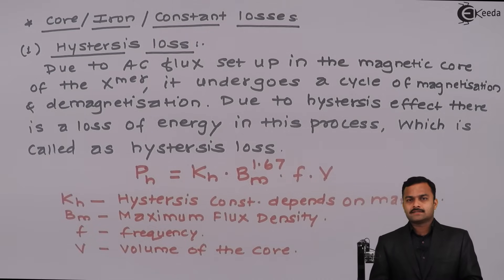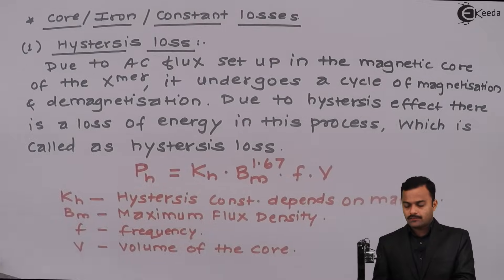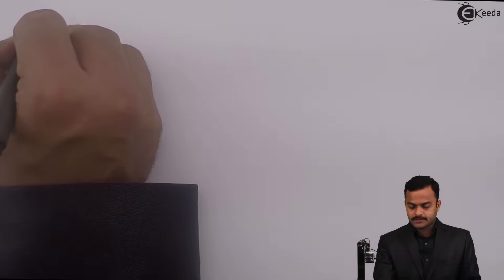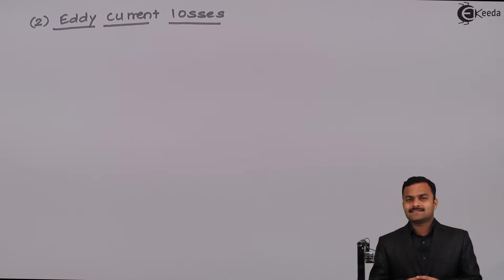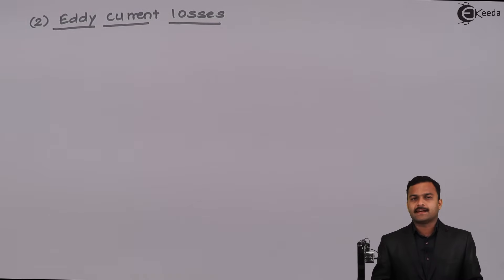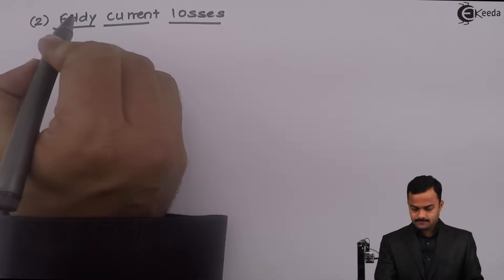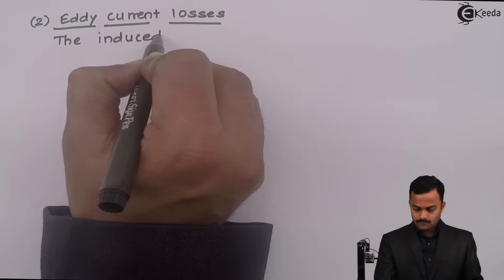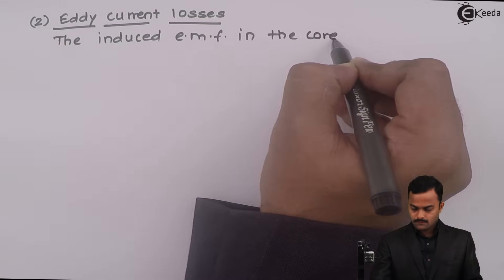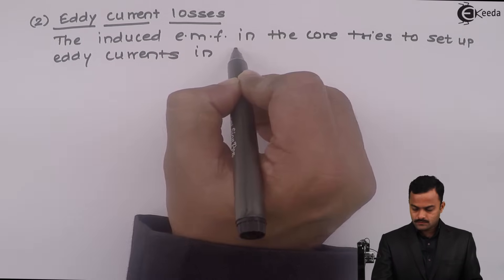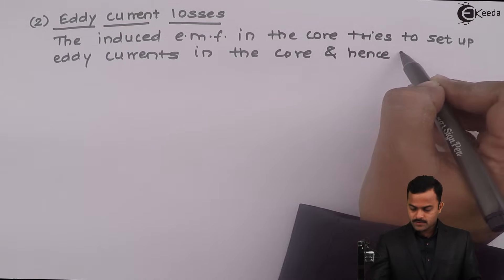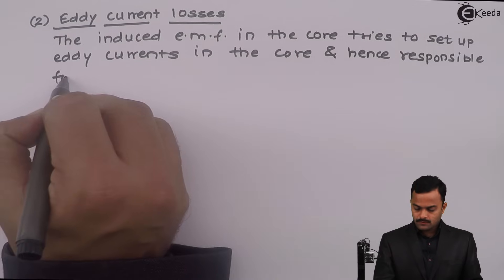The second type of core losses are eddy current losses. The EMF induced sets up eddy currents in the core, and that is a wastage of energy. The energy lost to produce these eddy currents is called eddy current losses. The induced EMF in the core tries to set up eddy currents in the core and hence is responsible for eddy current losses.